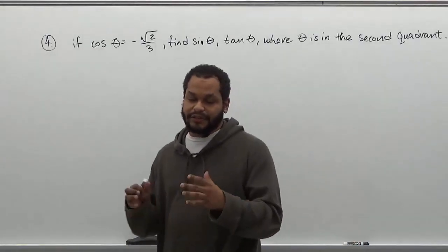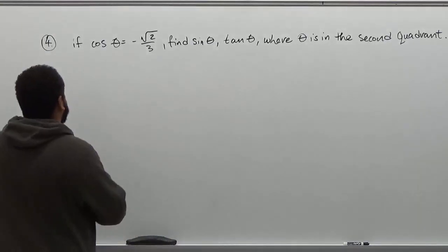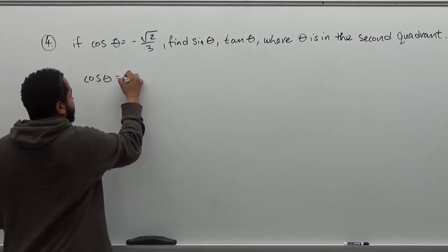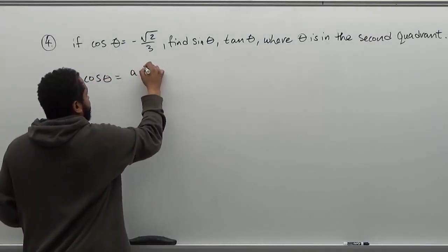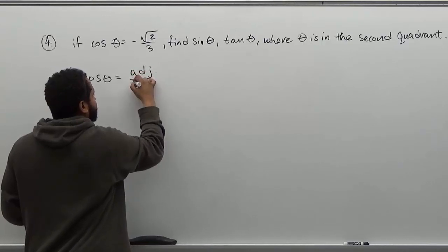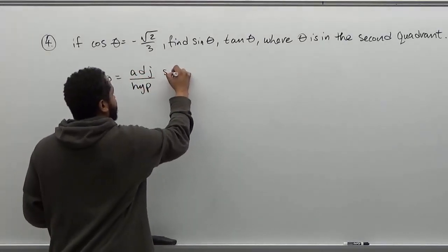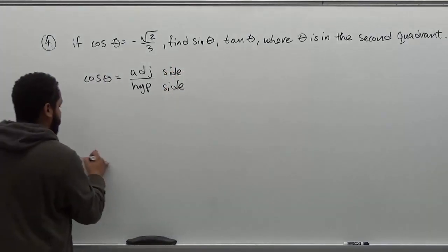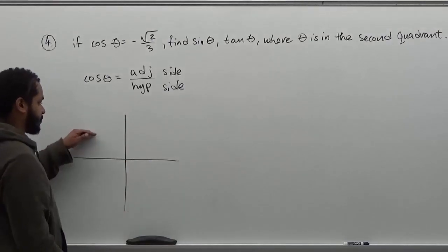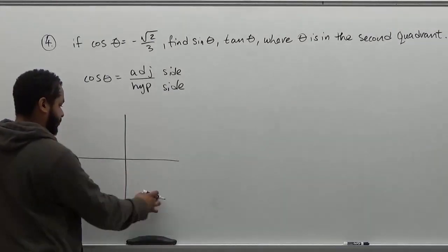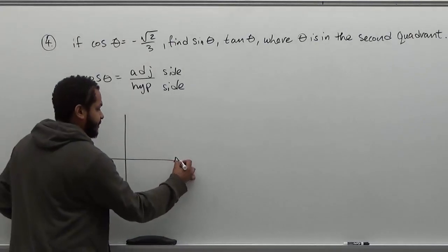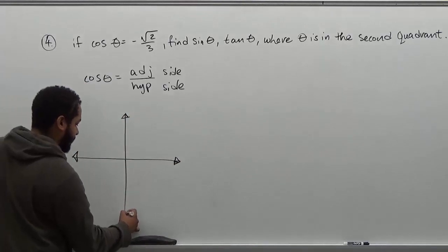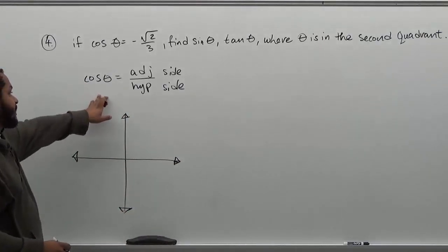The first thing we're going to do is set up the quadrants, and we're going to note that cosine of theta equals adjacent over hypotenuse. When we're in the second quadrant — this is quadrant one, two, three, and four — we're going to detail the quadrant and use this triangle based on the angle.